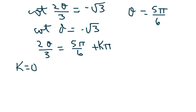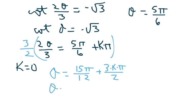Sorry about that. We have to first solve for theta by multiplying by 3 halves. So we get theta equals 15 pi over 12 plus 3 times k times pi over 2, which is the same as if we divide both of these by 3, we get 5 pi over 4 plus 3 times k pi over 2.